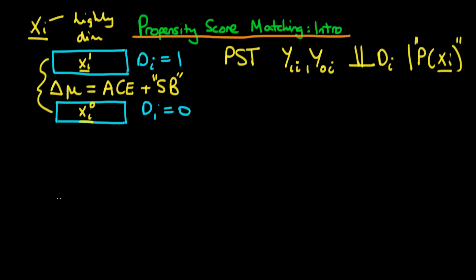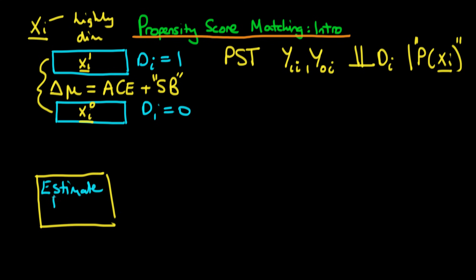In this video, I want to provide an introduction to how we actually go about doing propensity score matching and some of the intuition as to why it works. The first step we require is to estimate the propensity scores. We estimate propensity scores typically using either a logistic model, but some more recent papers have suggested using generalized boosted modeling, which involves decision trees. Both of these approaches result in the same sort of output — for each individual in our sample, we estimate the probability that they would have chosen to be treated given the list of covariates.